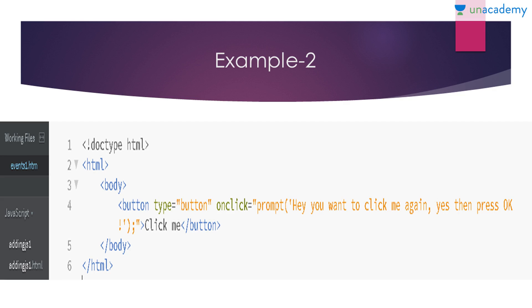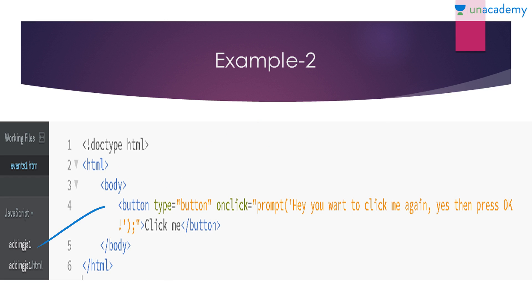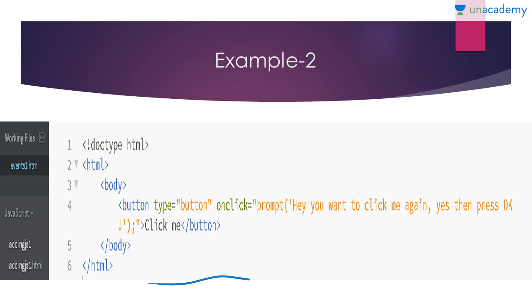Now here is another example. This is my HTML page with a body section. I have written code for a button using the opening and closing button tag with type='button'. I used an HTML event attribute 'onclick', so whenever someone clicks on the button it should show a prompt: 'Hey, you want to click me again? Yes, then press OK.' A prompt is a simple message box where you can write your own message and submit a value.